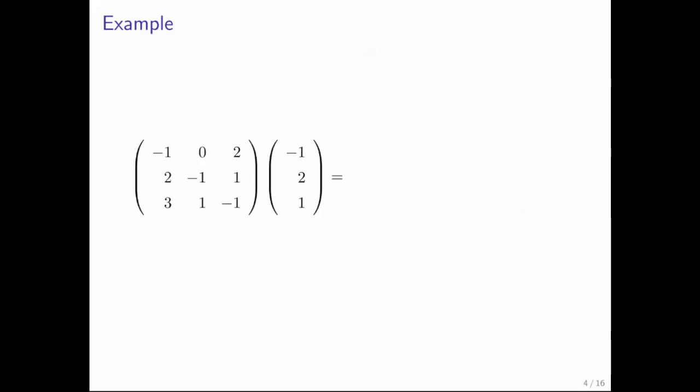Let's go through an example. Here, we just do A times x, and we know that that should be the first entry of the vector times the first column of A, plus the second entry times the second column of A, plus the third entry times the third column of A. So let's write that down. We get minus 1 times the first column, plus 2 times the second column, plus 1 times the last column.